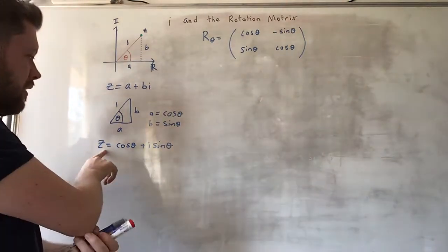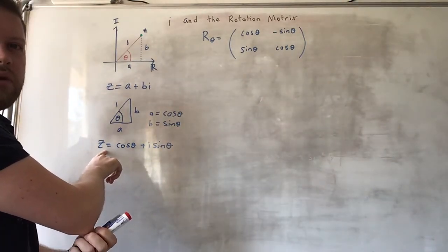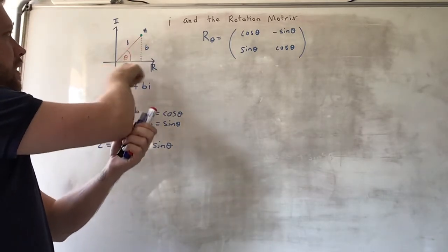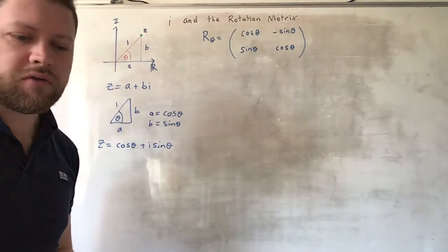So if we do that, we can interpret a complex number in terms of the angle it makes rather than in terms of the components, although they're equivalent.